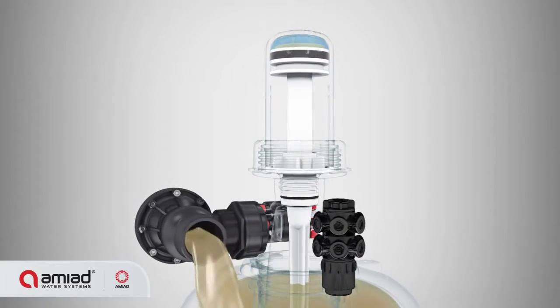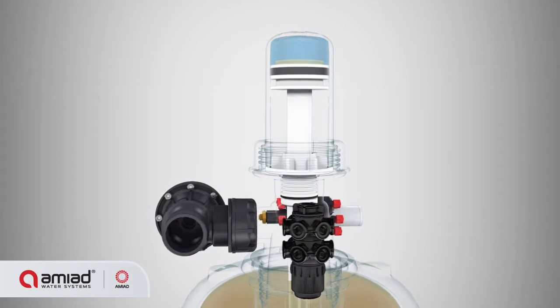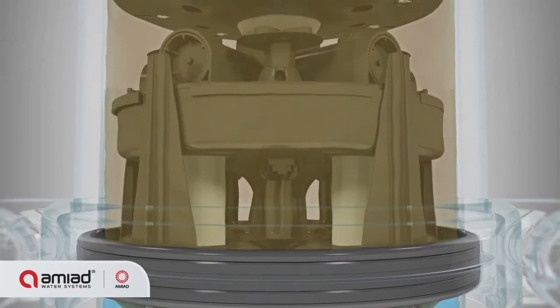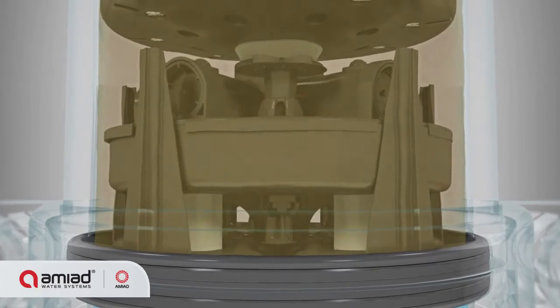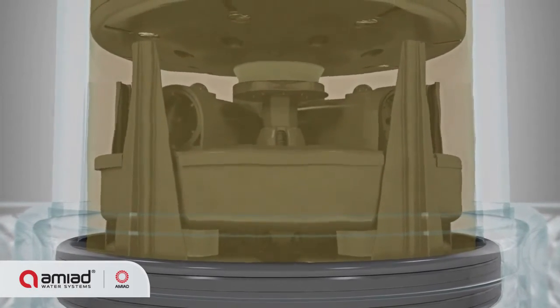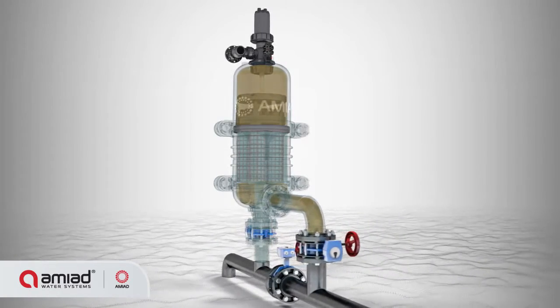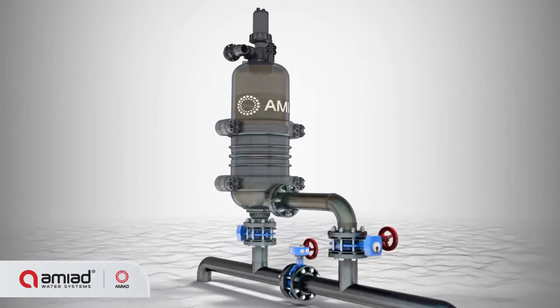Once the filter cake is removed, the pressure differential returns to normal. The filter returns to its standard filtering mode and is ready for the next flushing cycle. Clean water continues to flow through the filter's outlet.